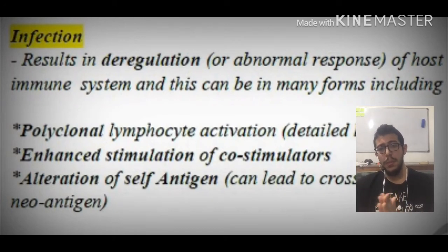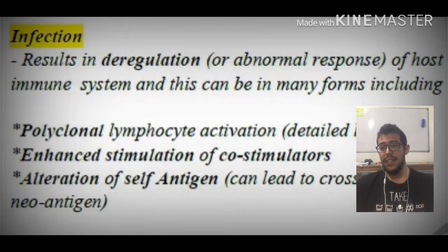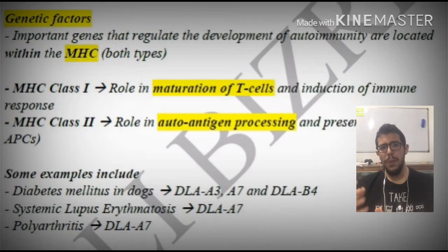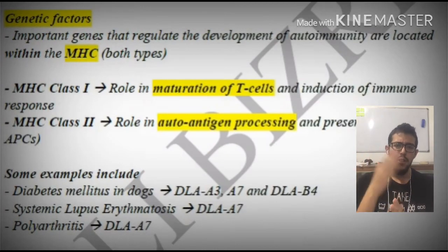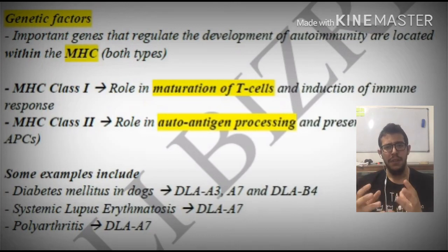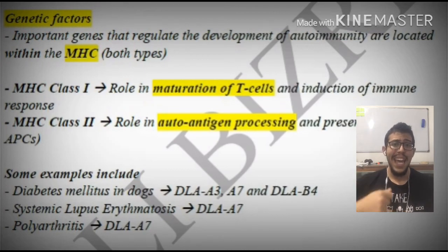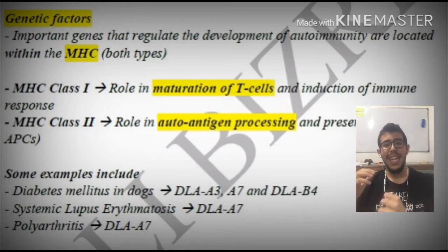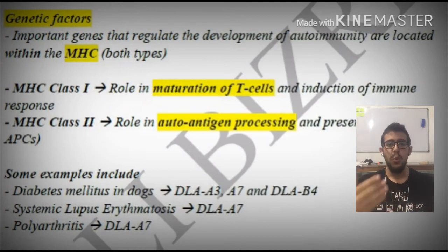Now, enhanced stimulation of co-stimulators will be spoken about more during the next lecture. Alteration of the self-antigen, which we have previously mentioned, is also a factor. Finally, genetic factors also play a role. Going back to the first video in this series on autoimmune diseases, we mentioned that we have a sophisticated mechanism within our body that ensures antigen-presenting cells can distinguish between self and non-self. However, certain genetic factors can cause alterations in this primary mechanism.